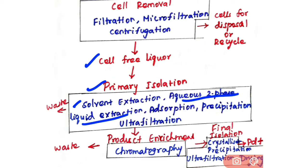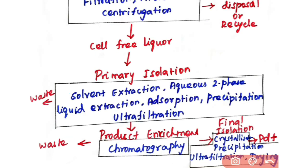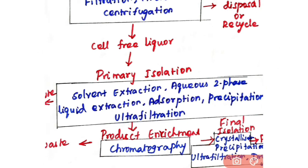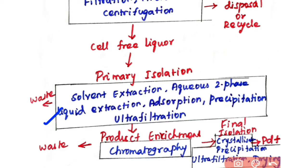Primary isolation techniques used include solvent extraction, aqueous two-phase liquid extraction, adsorption, precipitation, and ultrafiltration. The aim of primary isolation is to remove impurities that have properties different from those of your product. The selection of method depends upon the physical and chemical properties of your product and the surrounding material.